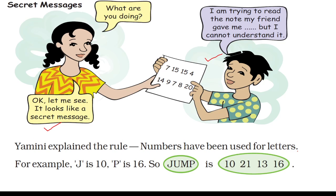Children, tell me: how many letters are there in the English alphabet? Yes, very good — the English alphabet consists of 26 letters. The 10th letter is J, the 16th letter is P, the 21st letter is U, and the 13th letter is M. So the secret message 10-21-13-16 has been decoded — the answer is JUMP.